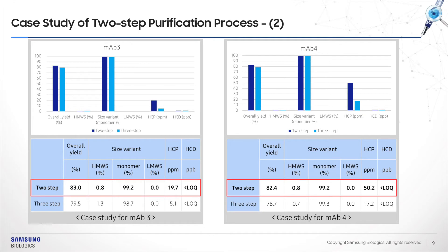In the case of mAb3 and mAb4, the two-step purification platform was also comparable to the three-step purification in terms of yield, purity, HMWS, LMWS, HCP, and HCD.